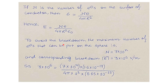To avoid breakdown, the maximum number of electrons that can be put on the sphere is N = 7 × 10ⁿ, where we have to find n. The corresponding breakdown electric field |E| given in the question is 3 × 10⁶ volt per meter.